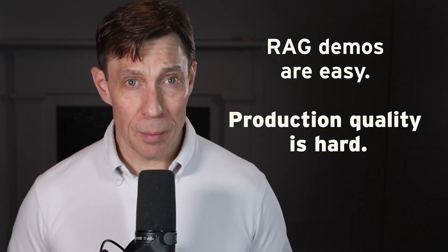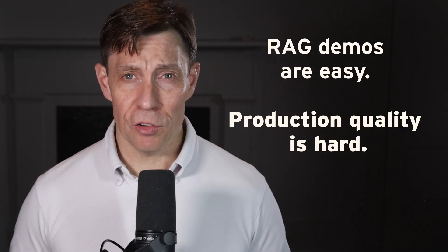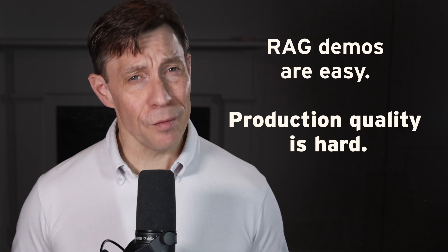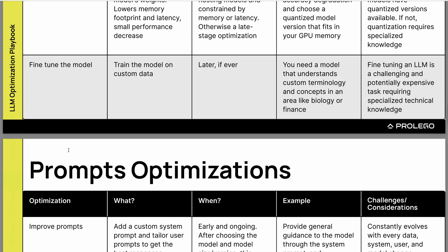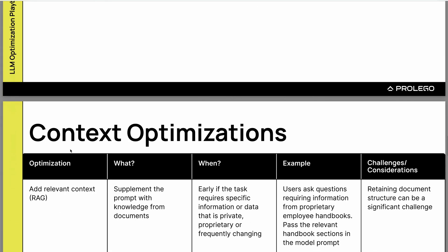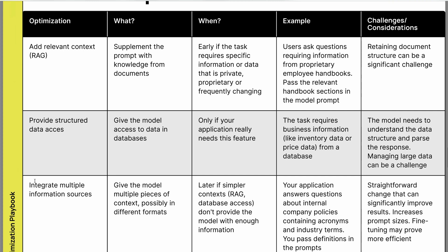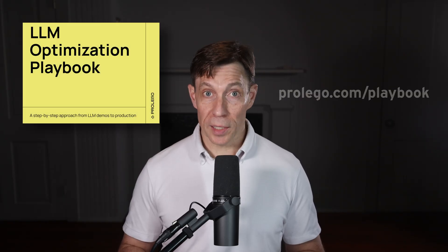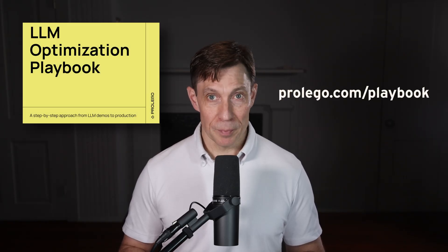So you followed the online tutorials and built a basic RAG solution. Unfortunately, it can't handle complex or ambiguous customer questions. Building a RAG demo is easy, but getting a production-ready application is significantly harder. You need to improve it through the 13 techniques described in our LLM optimization playbook. Download your free copy at ProLego.com/playbook.